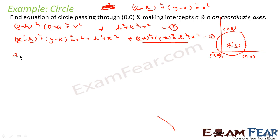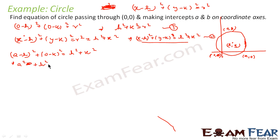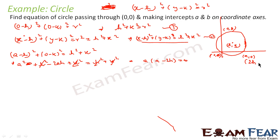Since (a, 0) satisfies this equation, substituting gives (a - h)² + (0 - k)² = h² + k². Expanding: a² - 2ah + h² + k² = h² + k². The h² and k² terms cancel, giving a(a - 2h) = 0. Since a ≠ 0, we get a = 2h, therefore h = a/2.